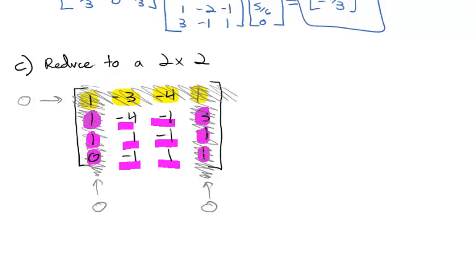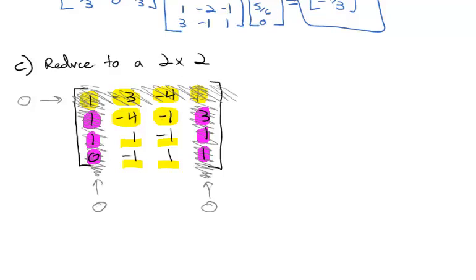Now we have two columns. Let's go back and see if we can eliminate a row with what's left. For the second row: negative 4 is smaller than 1 and negative 1 in the third row; negative 1 is smaller than or equal to negative 1 and 1. Now it works — because we eliminated those extra columns, the second row is now dominated. We delete it and assign it zero in our strategy. Now we have our reduced two-by-two matrix: 1, negative 1, negative 1, 1.